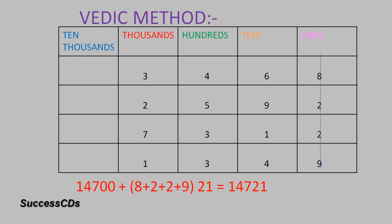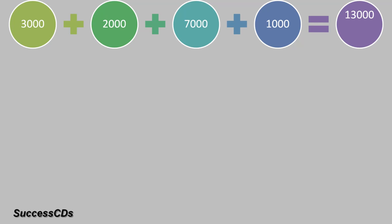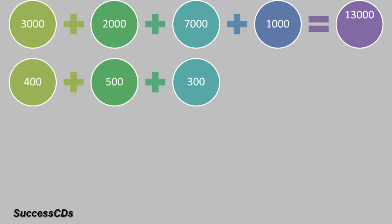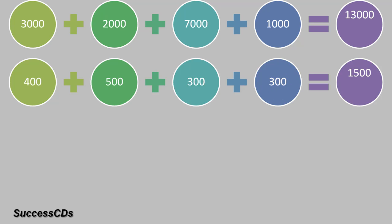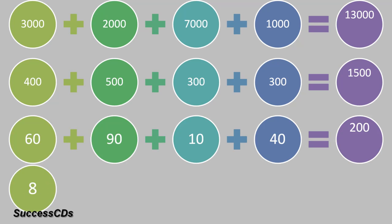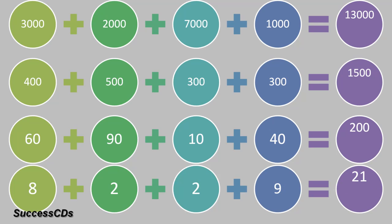This method takes lesser time and less paperwork. We added the thousands place numbers and got 13,000. Then the hundreds place numbers gave 1500. Then the tens place numbers — their sum was 200. And the ones place numbers gave a total of 21. So 13,000 plus 1500 gave us 14,500, plus 200 gave us 14,700, and we added 21 to get the answer 14,721.